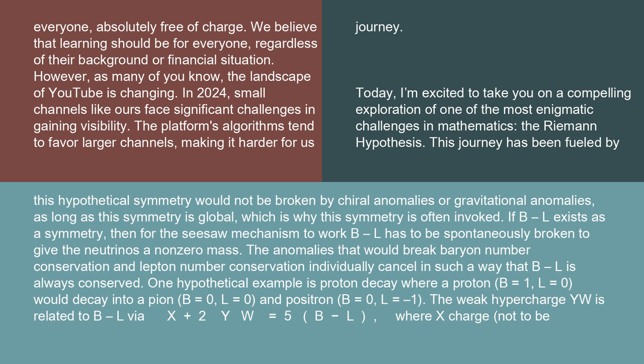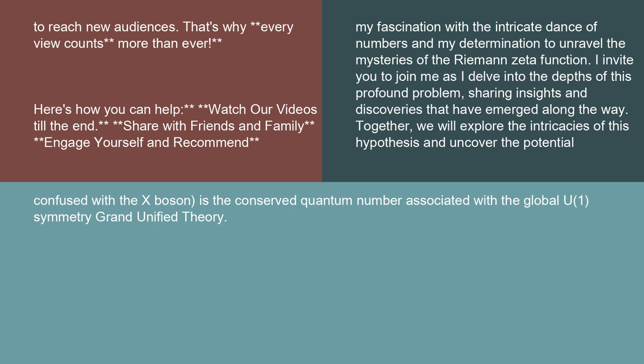The weak hypercharge Y_W is related to B-L via X + 2·Y_W = 5·(B minus L), where X charge — not to be confused with the X boson — is the conserved quantum number associated with the global U(1) symmetry in grand unified theory.